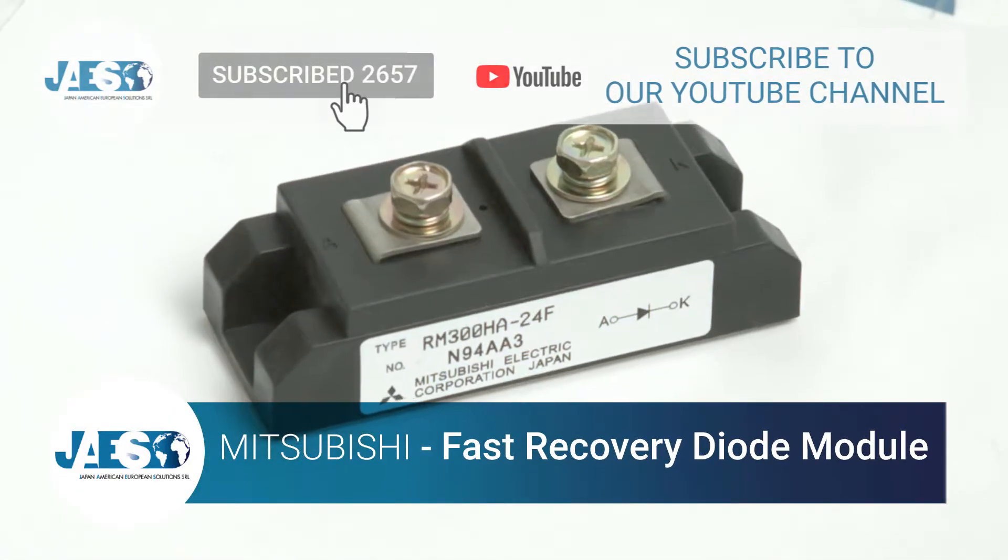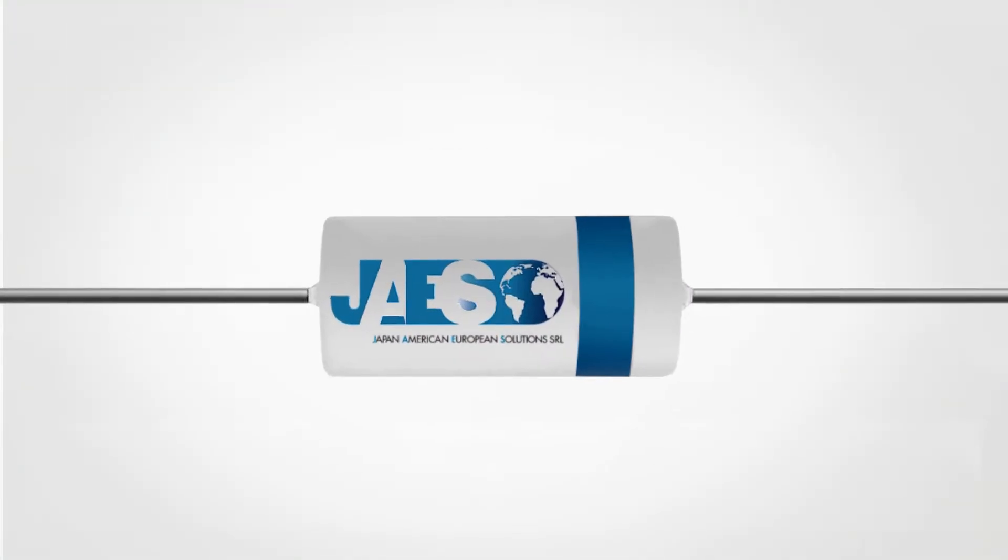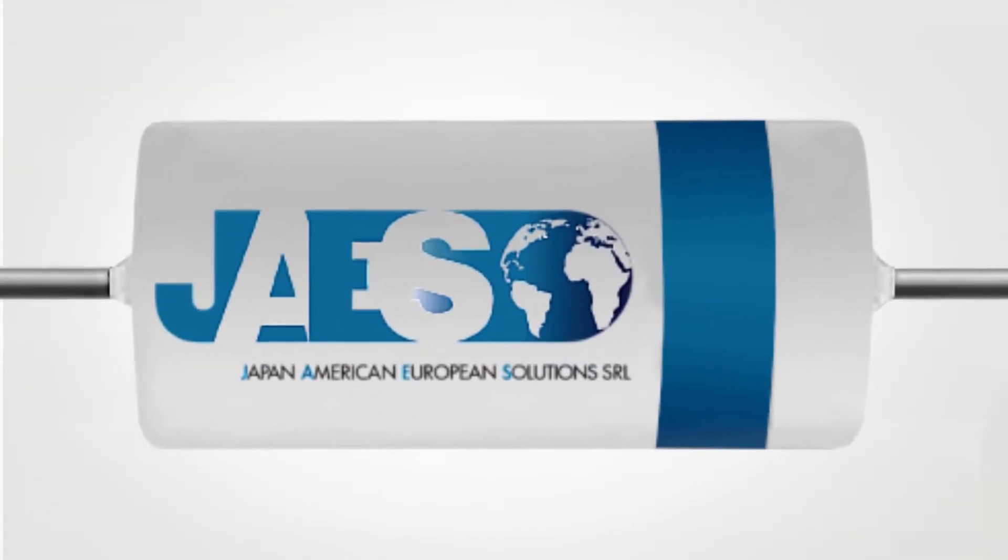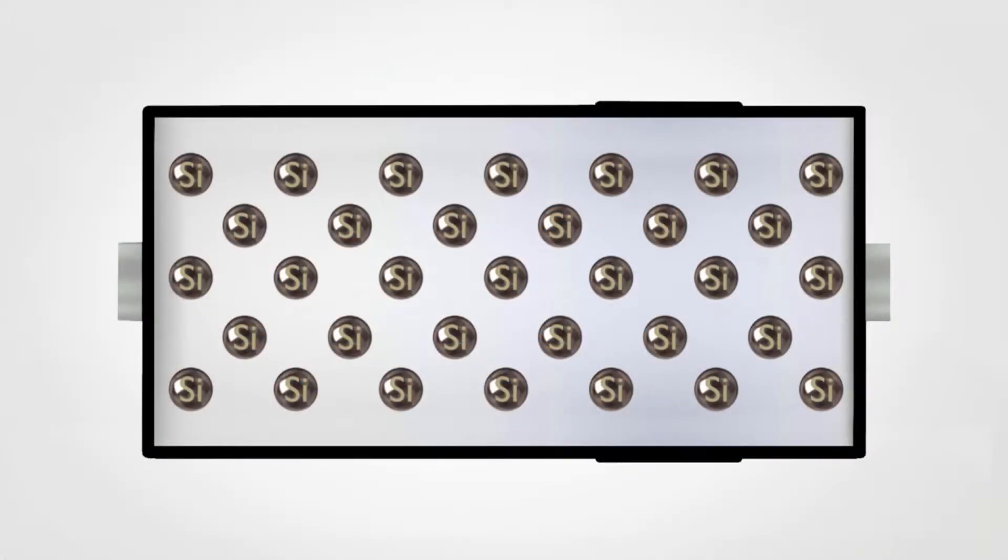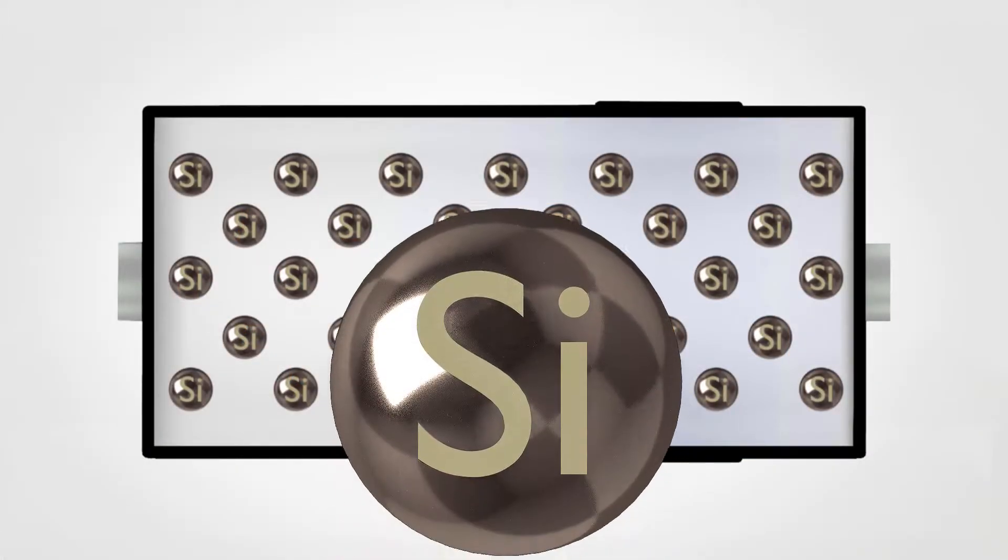But how is a diode made? We can see that here inside is a semiconductor material. In this specific case silicon.